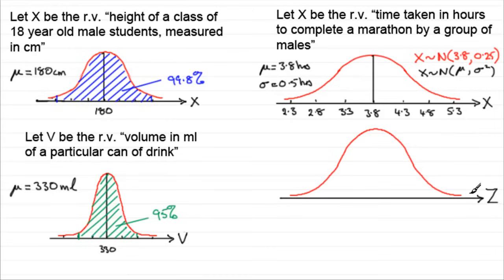And we denote the random variable of this distribution by Z. And Z then is normally distributed with a mean of zero and a standard deviation of one. So the variance would be one squared, which is still one.